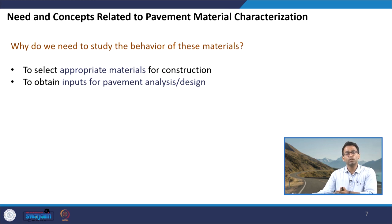We also need to study the material to obtain inputs for pavement analysis and design. For example, in flexible pavement design, resilient modulus is used as one of the properties for different layers. That means I have to have the value of resilient modulus of these layers in order to design and analyze the pavement, and to find the thicknesses of different layers for a given project with a specific amount of traffic and a specific number of design years.